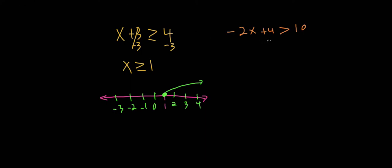So let's go ahead and solve. So first we subtract by 4 on both sides. This cancels. 10 minus 4 is 6. So we have negative 2x is greater than 6.